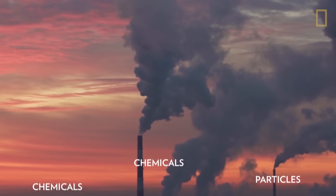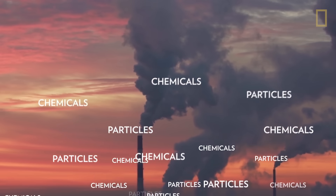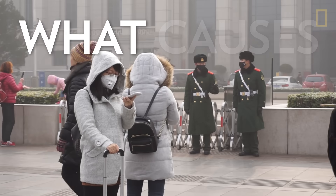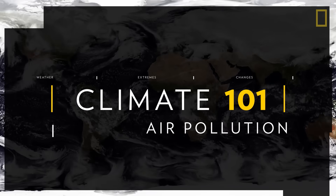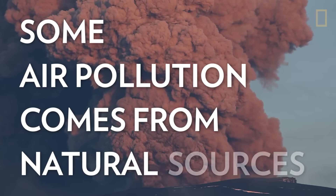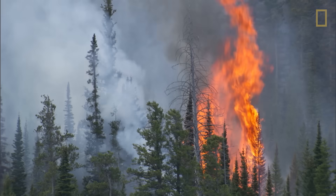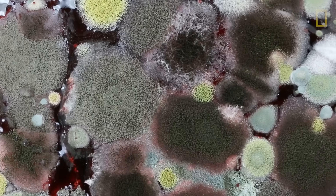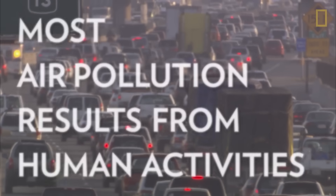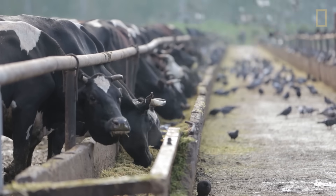Air pollution consists of chemicals or particles in the atmosphere that pose serious health and environmental threats. But what causes air pollution, and what does it mean for our planet? Some air pollution comes from natural sources like volcanic eruptions, wildfires, or allergens. But most air pollution results from human activities, such as energy use and agriculture.